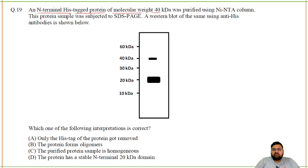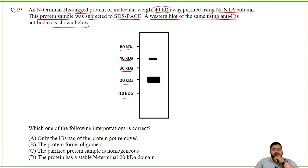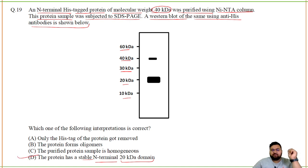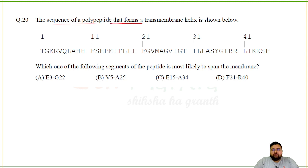An internal histidine-tagged protein of molecular weight 40 kDa was purified using an Ni-NTA column. This protein sample was subjected to SDS-PAGE and a western blot using anti-histidine antibodies. The western blot shows bands at 40 kDa and 20 kDa. The correct interpretation: the protein has a stable N-terminal 20 kDa domain, as can be directly inferred from the diagram.